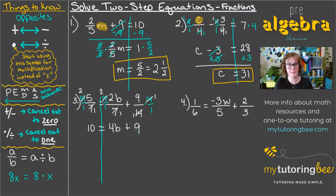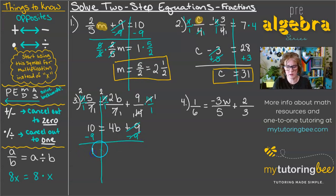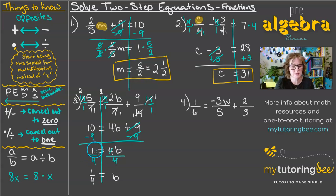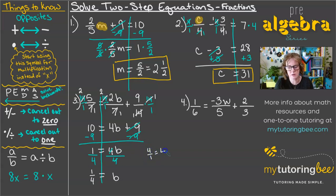Now let's finish solving by working in that backwards order of operations. I want to undo this addition of 9, so we subtract 9 from both sides, leaving us with 1 = 4b. Then since 4 is being multiplied times b, we divide both sides by 4. That cancels the 4s, leaving just b, and this gives us b = 1/4. A common mistake I see students make is calling this just 4 since they see that 1. When the 1 is in the numerator, we have to leave it as a fraction: 1/4. If it were 4/1, that would equal 4, but 1/4 cannot be changed to just 4.